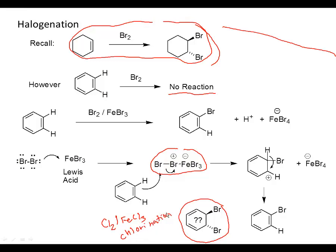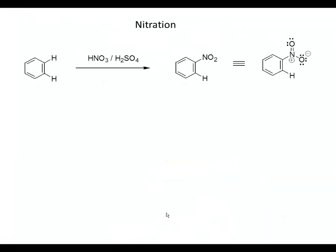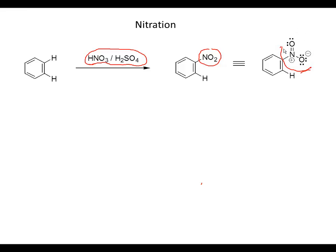Iodination requires a much fancier recipe — we won't talk about that in this class — and fluorination is somewhat difficult to control. The next reaction we're going to look at is nitration. We take a benzene ring and treat it with nitric acid and sulfuric acid to generate nitrobenzene. It's important to remember that a nitro group is one of those compounds where it can't be drawn without putting a charge somewhere.